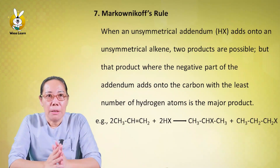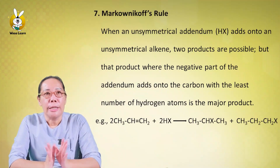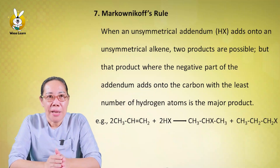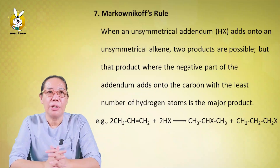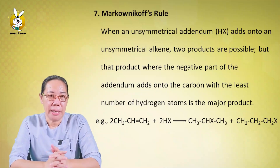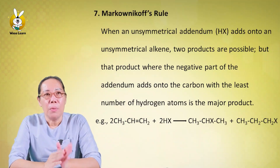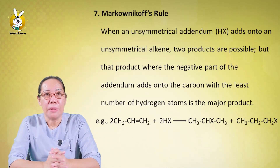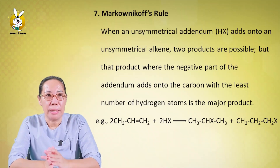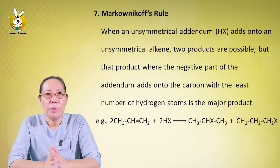Now we come to Markovnikov's rule definition: when an asymmetrical reagent HX adds on to an asymmetrical alkene, two products are possible — a major product and a minor product.